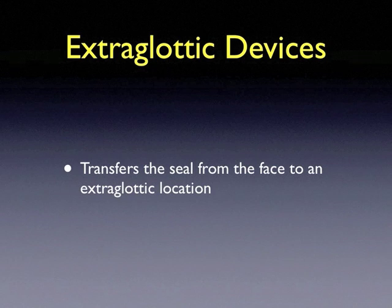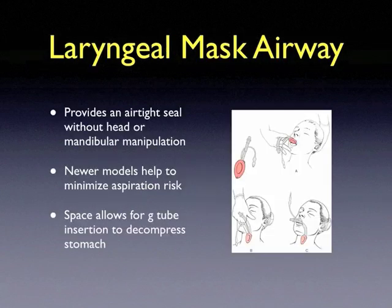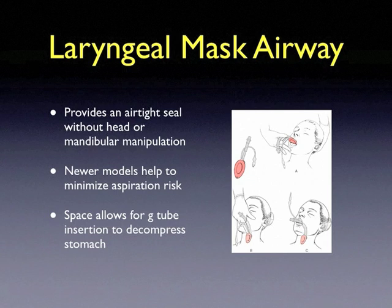Extraglottic devices transfer the seal from the face to an extraglottic location and can be placed by anyone with basic airway management skills. The laryngeal mask airway is one example placed blindly: the balloon is passed into the patient's mouth, the tip inserts into the proximal esophagus, the cuff is inflated, and the balloon provides some protection against aspiration of gastric contents. Newer models have additional features to minimize aspiration risk. Most LMAs also have a port for G-tube insertion to decompress the stomach and remove gastric contents.